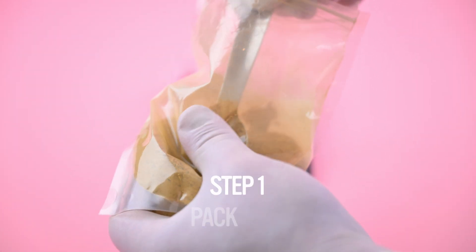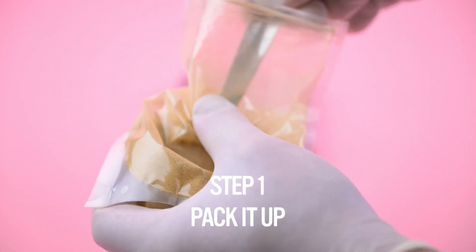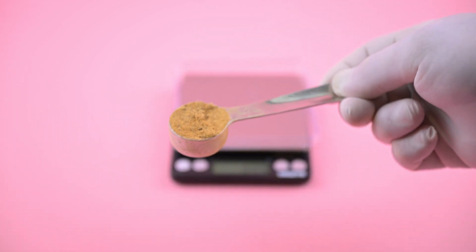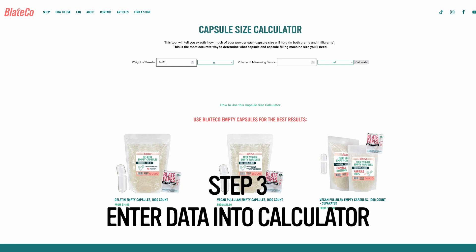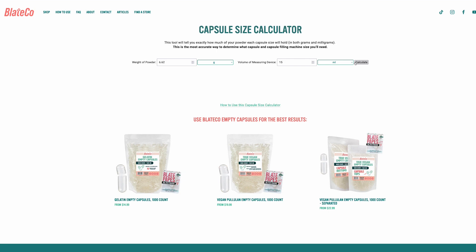The steps are: pack as much of your supplement powder as you can into the measuring device you've chosen and make sure the top is flat. Then pour out and weigh that powder. Enter the weight of the powder and the volume of your measuring device into the calculator and select calculate.